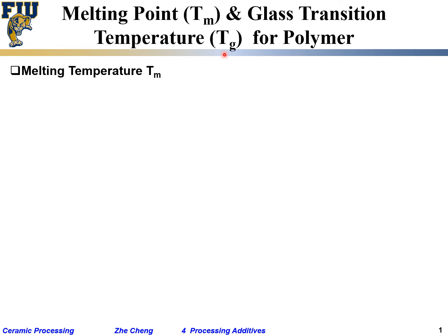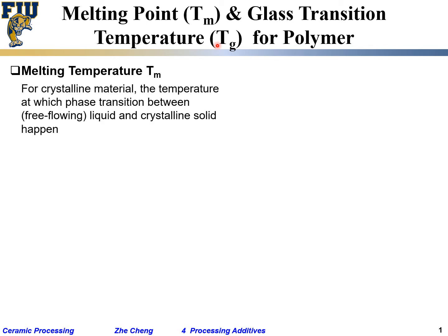We are going to talk about an important concept for the so-called polymer binder that we add into the ceramic paste or ceramic slurry. Two points: one is the so-called melting temperature or Tm, the other one we call Tg or glass transition temperature.